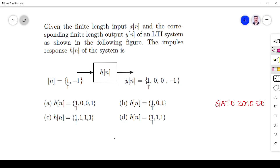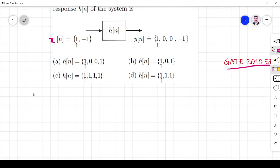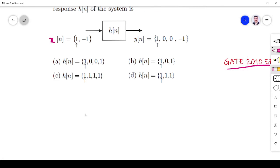Hi friends, in this video I have a question. Given the finite length input x[n] and the corresponding finite length output y[n] of an LTI system as shown, we have x[n] and y[n]. We have to find h[n], the impulse response of the system.